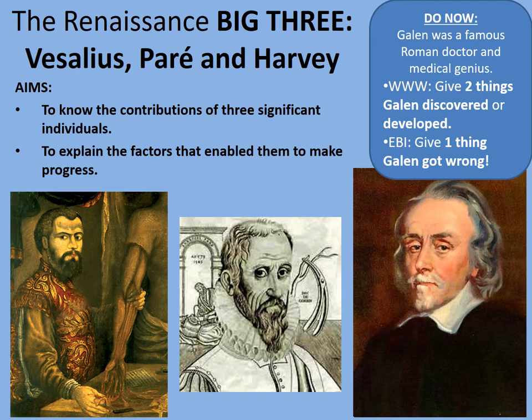For things Galen got wrong, he believed that blood was used up in the body like a fuel before being replaced with new blood created in the liver. This sort of makes sense, but it was entirely wrong — and William Harvey, who we'll study later in this lesson, was able to prove this.